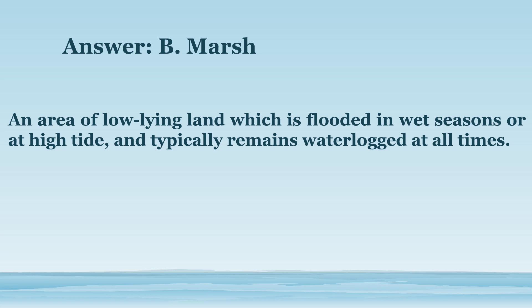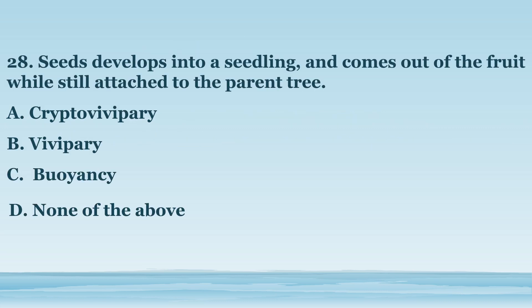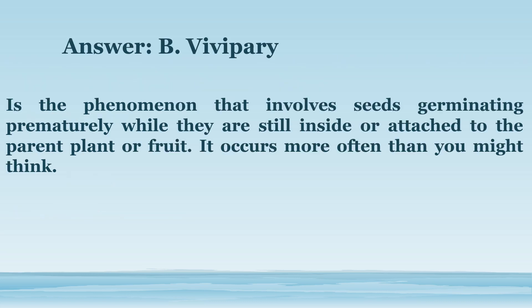Number 28. Seeds develop into a seedling and come out of the fruit while still attached to the parent tree. Vivipary — seeds germinating prematurely while they are still inside or attached to the parent plant or fruit.